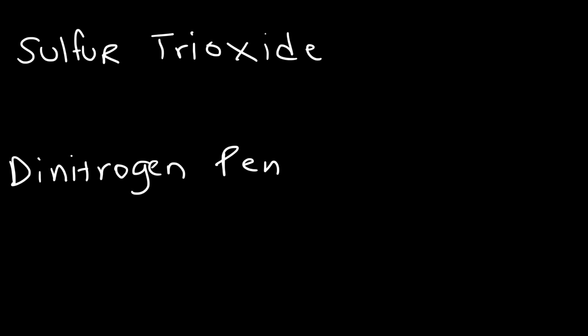So let me give you some other examples. Go ahead and write the chemical formulas of sulfur trioxide, dinitrogen pentoxide, and selenium tetrabromide.